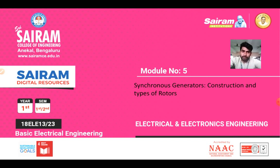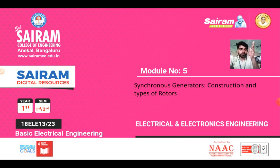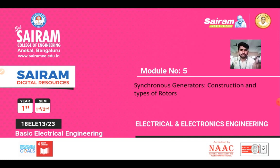A generator which converts mechanical to electrical energy. It rotates at synchronous speed, constant speed, and also to keep the frequency constant. We have the synchronous generator, and we can also call it as an alternator. It gives alternating voltage and alternating current, that is why it is called an alternator, and it is also called an AC generator — it generates AC power supply.